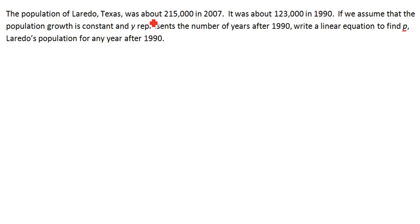All right, so the first thing we need to do is understand our problem. We read it and find that it's talking about the population of Laredo. We've got 215,000 people in 2007 and 123,000 in 1990. So as the years progress, the population is increasing.